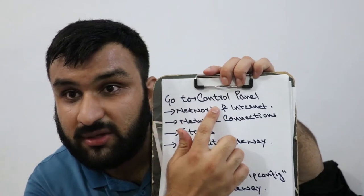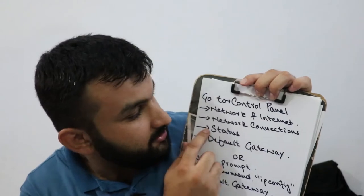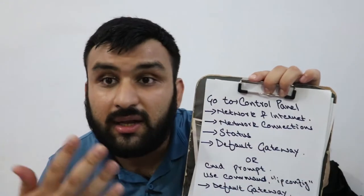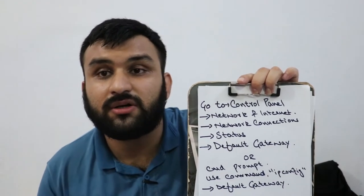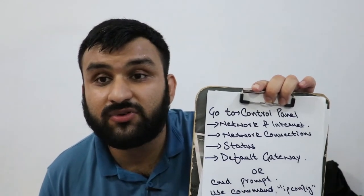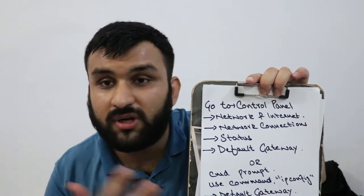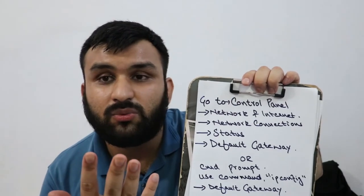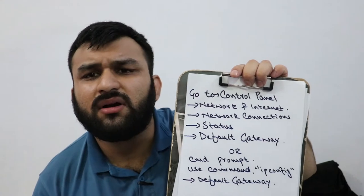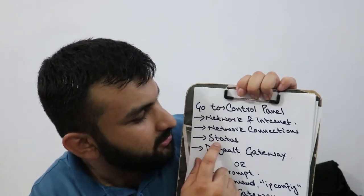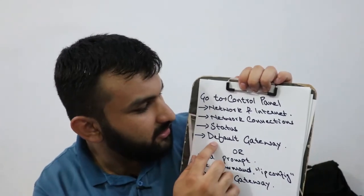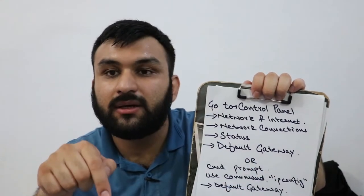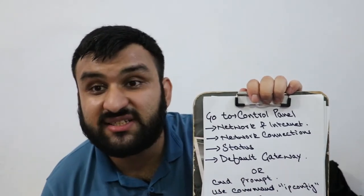First, go to the Control Panel, then go to Network and Internet, then go to Network Connections. Depending on your connection — either Wi-Fi or LAN — right-click on whatever you're connected to and click on Status. On the status page you'll find the default gateway, which is the default IP address, something like 192.168.10.1 or 192.168.1.1.